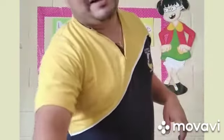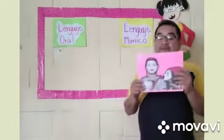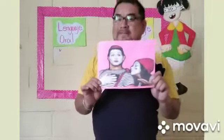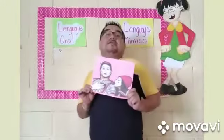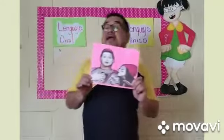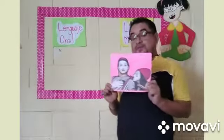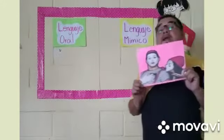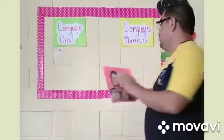Acá les traigo unas imágenes que ustedes me van a ayudar a clasificar según el idioma. Esta imagen, según ustedes, ¿qué tipo de lenguaje es? Vamos a escuchar a Adonai. Adonai, ¿en qué tipo de lenguaje cree usted que va esta imagen? ¿Será que va en el lenguaje oral o va en el lenguaje mínimo? Muy bien, Adonai. Adonai nos indica que esta imagen va colocada en el lenguaje mínimo.